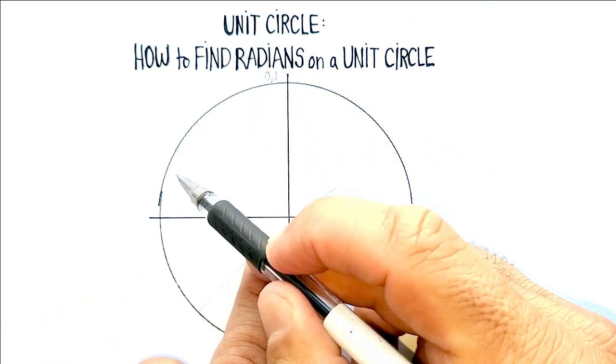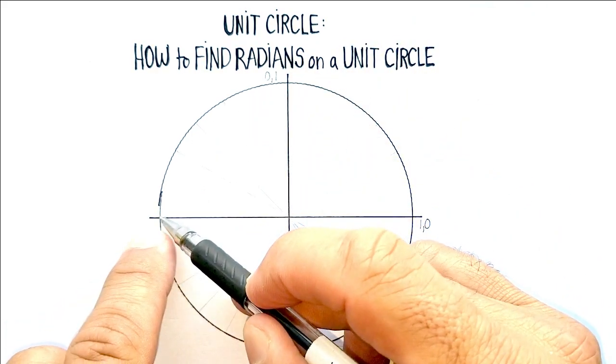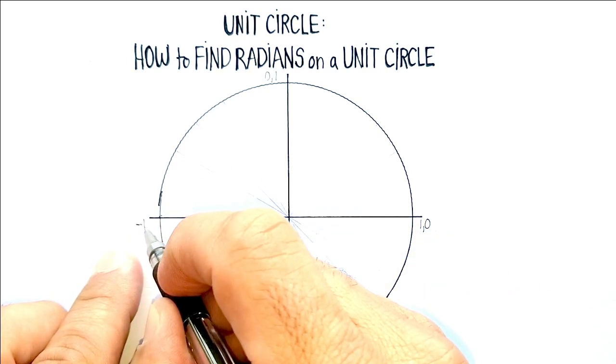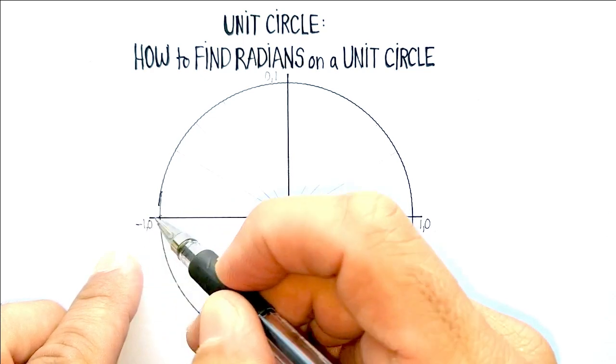Let's continue on around the unit circle. That means that the coordinate here would be negative 1, 0. Let's put that in there.